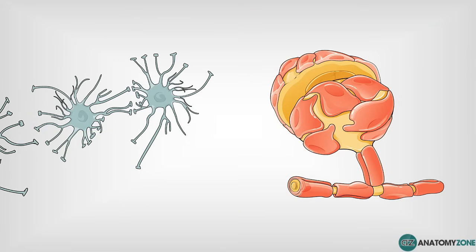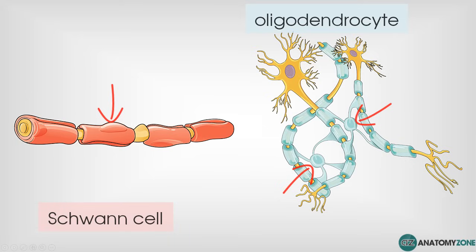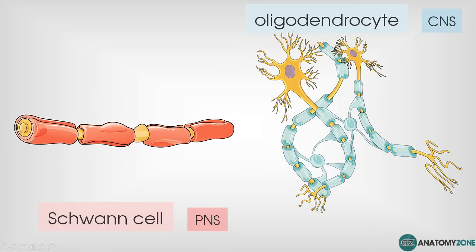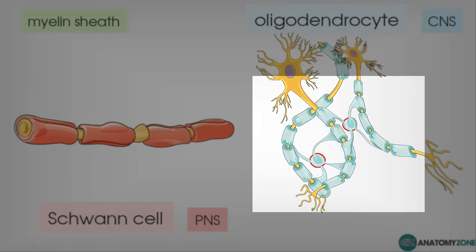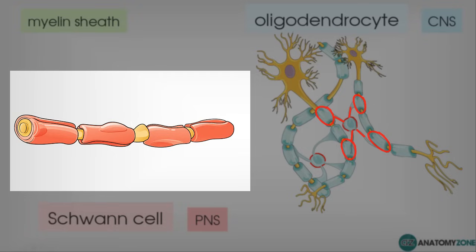The next set of glial cells are oligodendrocytes and Schwann cells. Oligodendrocytes are found in the central nervous system, whereas Schwann cells are found in the peripheral nervous system. They share the same function of insulating axons — they provide the myelin sheath around the axons. The oligodendrocyte extends from its cell body to encapsulate multiple axon segments, whereas the Schwann cell is a single cell that only encapsulates one single segment.